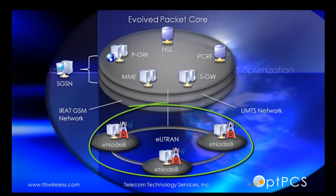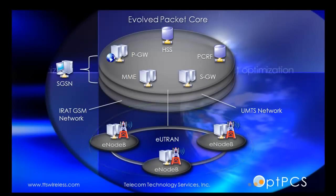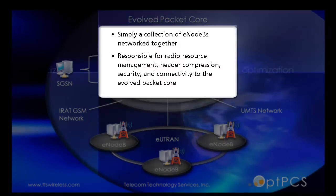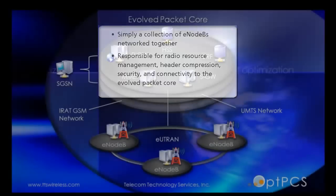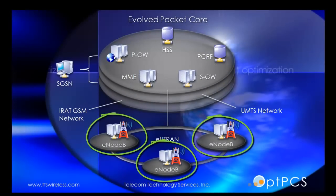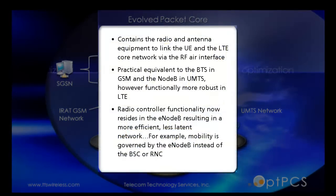The Enhanced UTRAN is simply a collection of eNodeBs networked together. It is responsible for radio resource management, header compression, security, and connectivity to the Evolved Packet Core. The Enhanced UTRAN contains the radio and antenna equipment to link the UE and LTE core network via the RF air interface. The practical equivalent is the BTS in GSM and NodeB in UMTS.